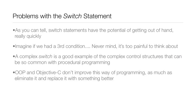Switch statements have the potential to get out of hand really quickly. Just imagine a third condition — it would be very complex and confusing to follow. This complex switch is a good example of the complex control structures common in procedural programming. Object-oriented programming and Objective-C don't really improve this style of programming so much as they eliminate it and replace it with something better.